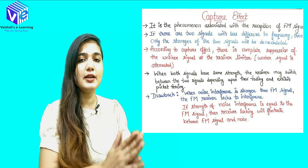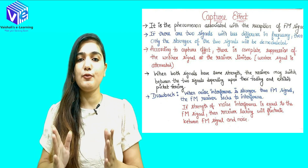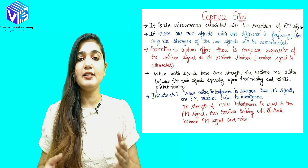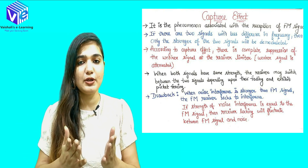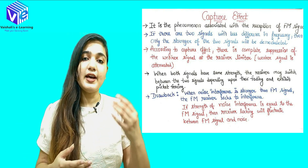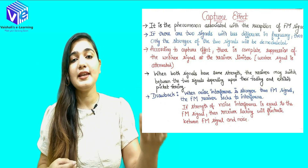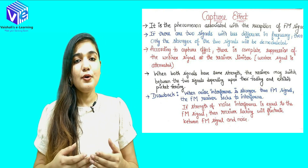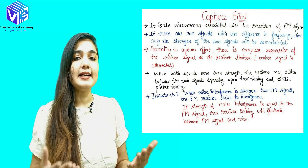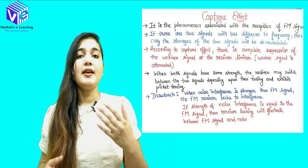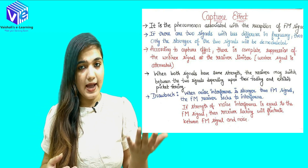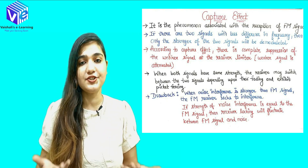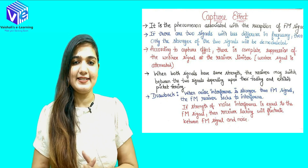If we have two signals with very close frequencies — 98.3 and 98.5 — with the help of the capture effect we can easily extract the higher strength signal. We can also extract the desired signal if it is interfered by noise, because noise generally has lower strength than the desired signal.